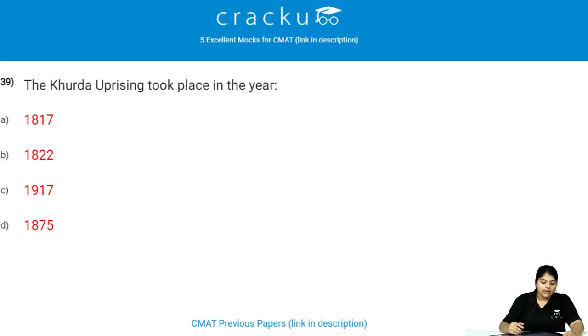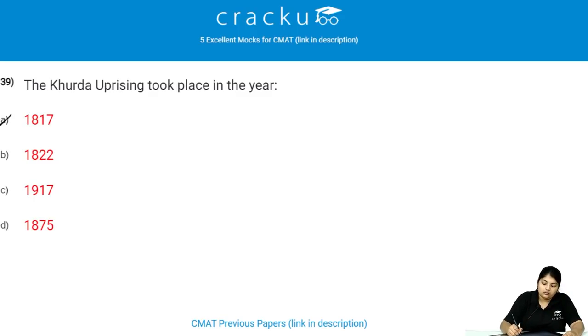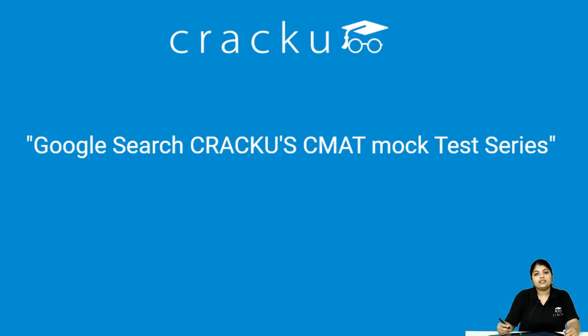The Kudra uprising took place in which year? It took place in the year 1817.